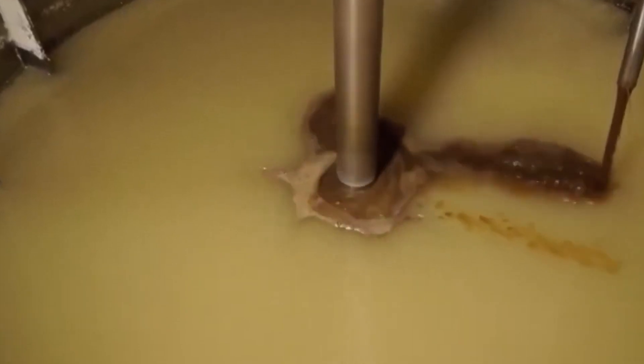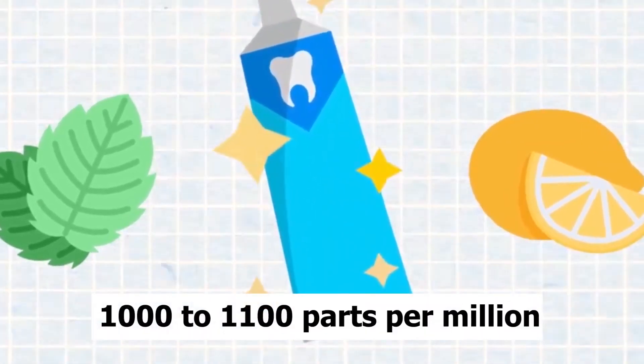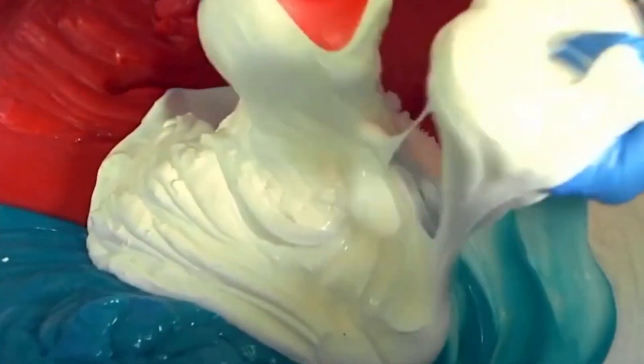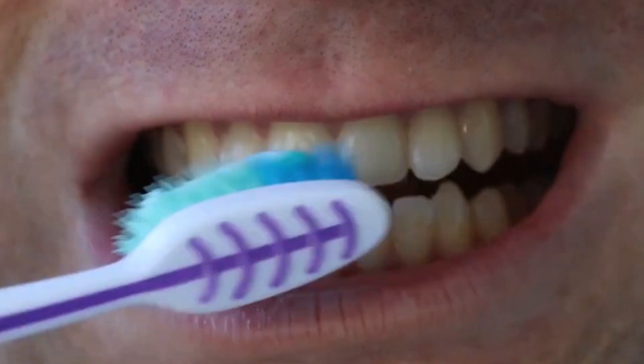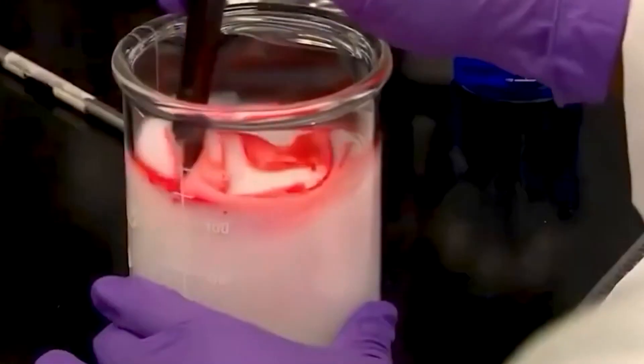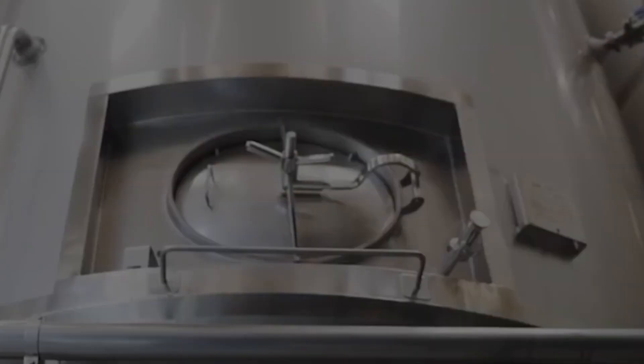Fluoride is hypothesized to play a role in the production of dental enamel and in preventing cavities. Fluoride levels in toothpaste can range anywhere from 1,000 to 1,100 parts per million in the United States, although they are typically higher in European countries like the United Kingdom. Detergents, often known as surfactants, are the substances that cause foam to form when you put toothpaste in your mouth. Sodium lauryl sulfate (SLS), the most prevalent kind of detergent found in toothpaste, is also believed to possess antibacterial properties.